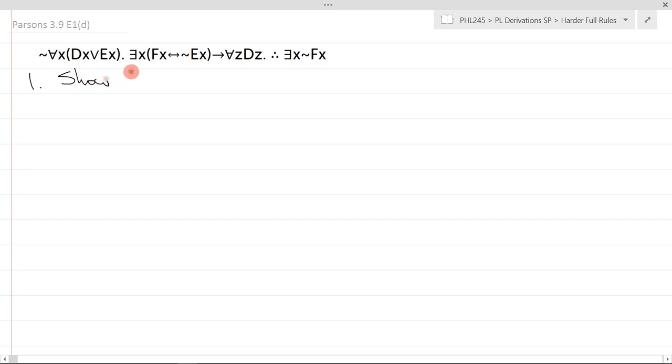Alright, so first I write my show line. I notice that it's an existential. Typically, if this were the case, I would be interested in just trying to find an instantiated version of it. But with all my rules available to me, I can basically do this by brute force, which means I'm going to immediately open up with an assume ID.